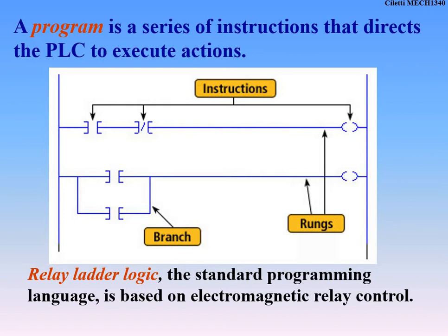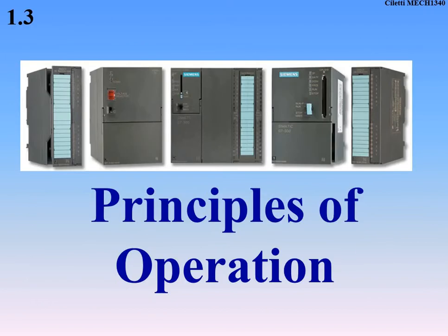A branch is technically an OR operation. This relates back to those of you who took digital electronics — ANDs, ORs, inverters, NAND, NOR, and exclusive ORs all come back into play. All of that translates into ladder logic. If I look at the top rung, those two contacts are ANDed together — a normally open and a normally closed contactor. For something to happen, this AND this has to happen. The branch shows two normally open contactors that are ORed together — this OR this can turn the output on.